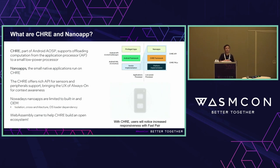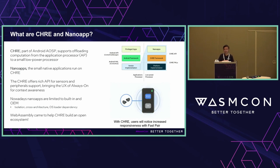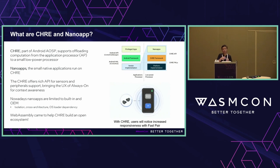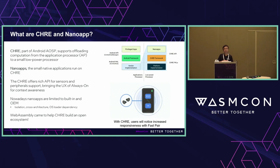Why do we need this kind of environment? For example, if you have earphones you want to pair with your Android phone, and your phone has a CHRE system, you can pair immediately. Without CHRE, you need to wake up the application processor, finish pairing, and end up wasting a lot of battery power. So the CHRE environment is a low-power, always-on, always-running environment that runs on a weak MCU with extremely limited resources.